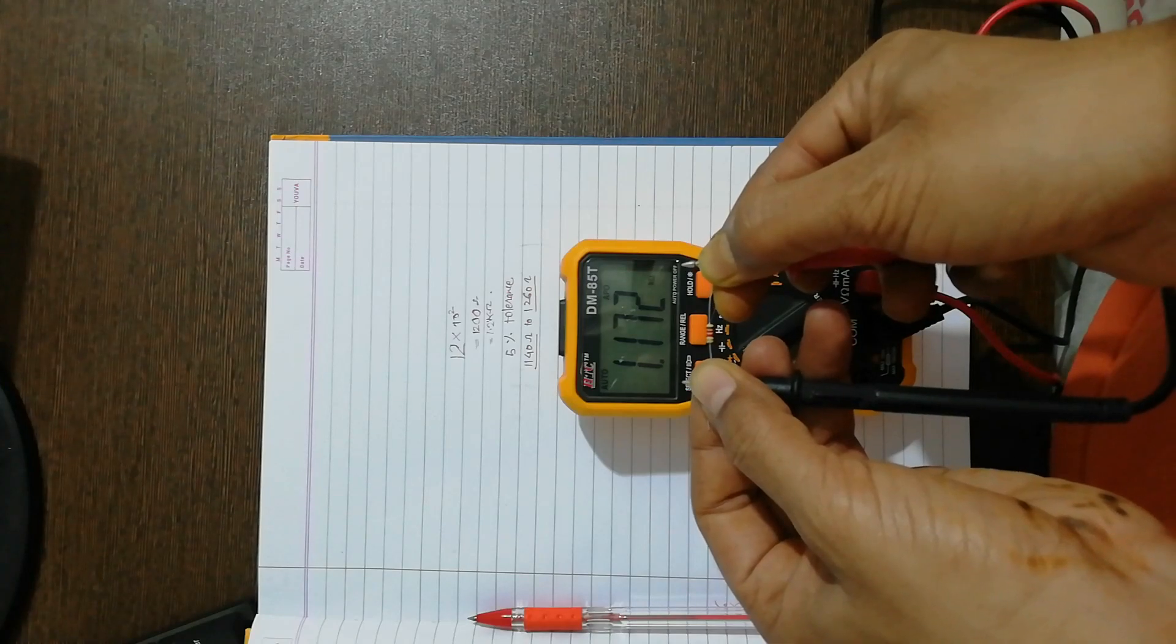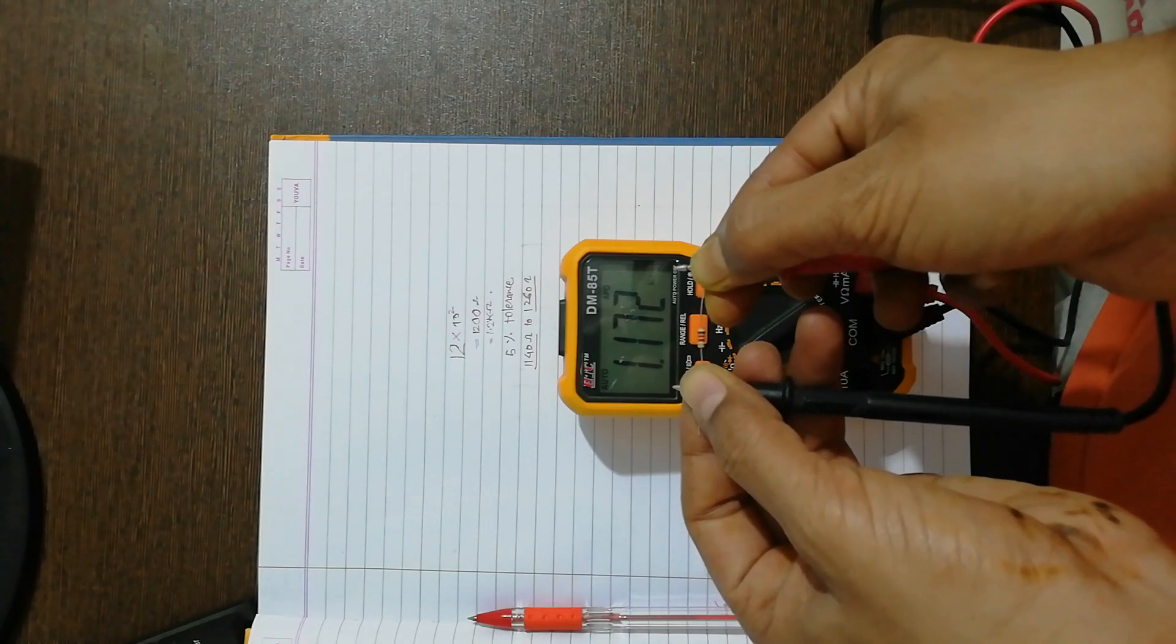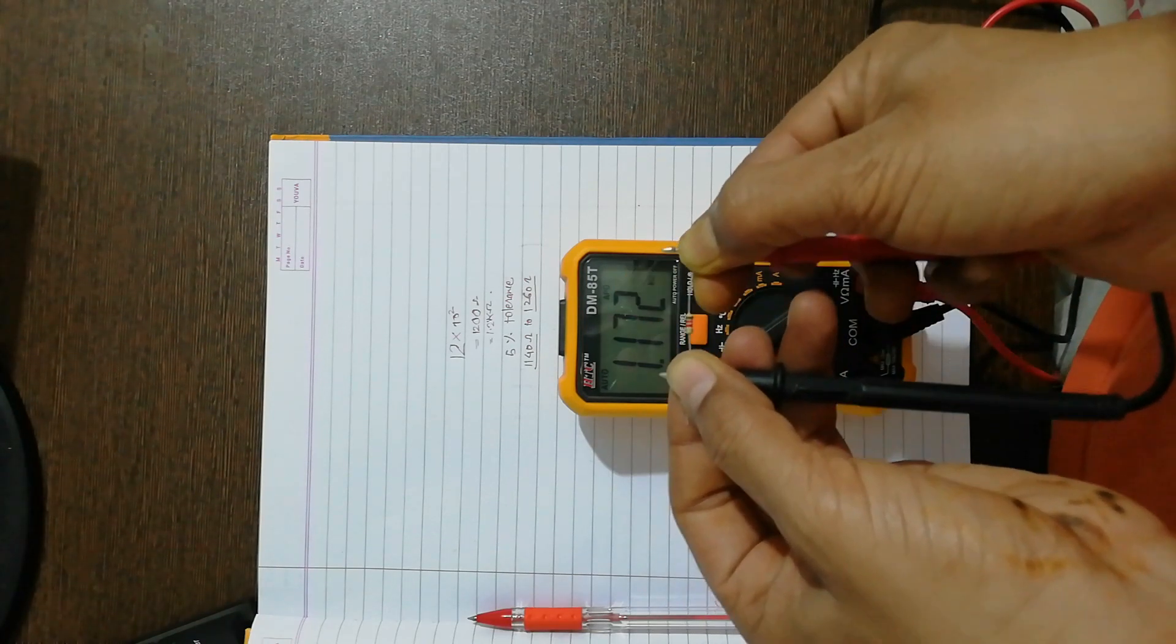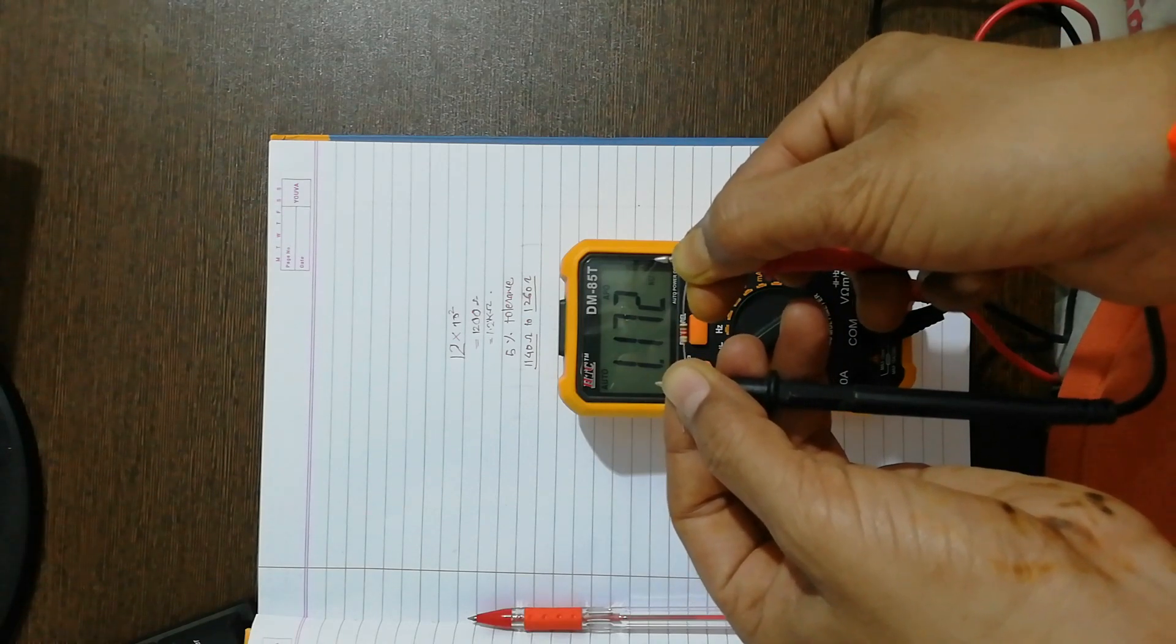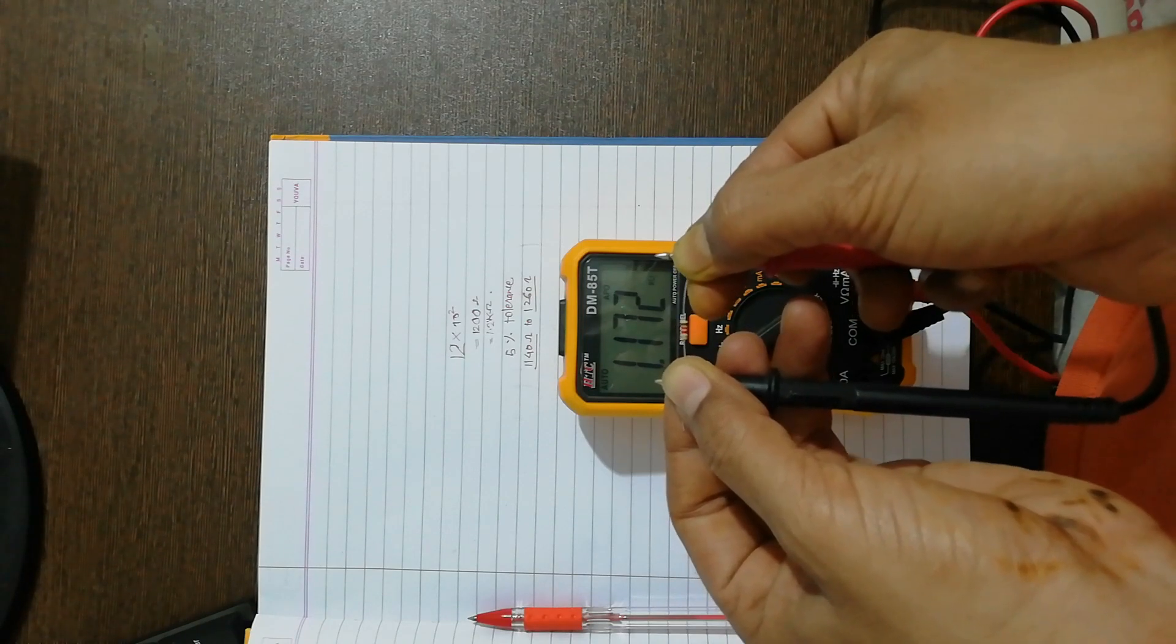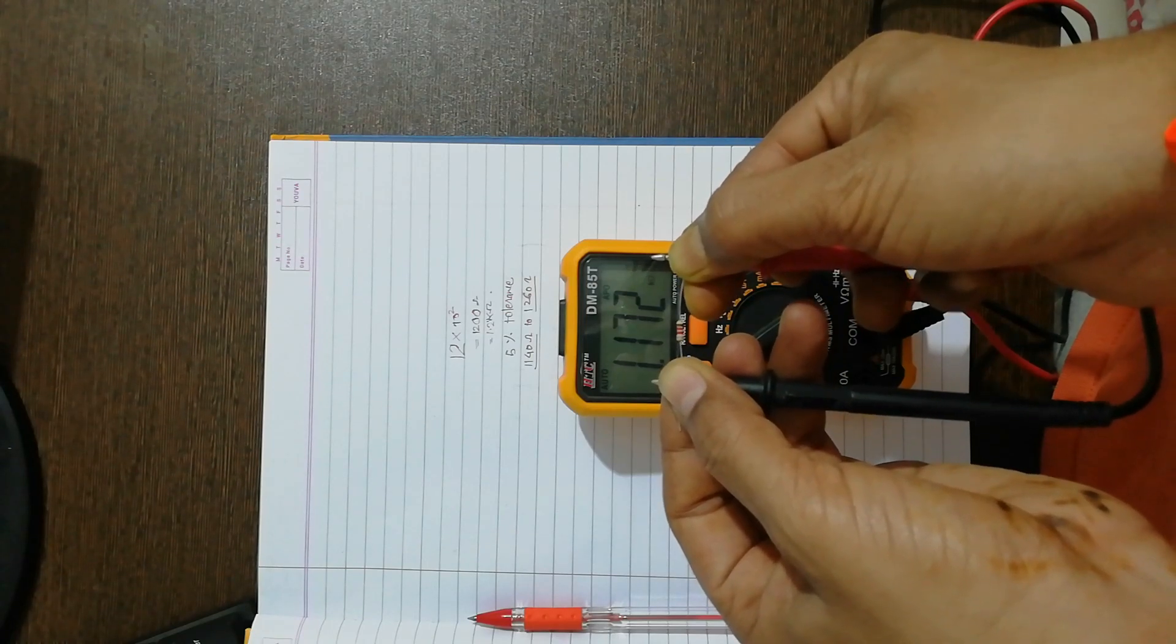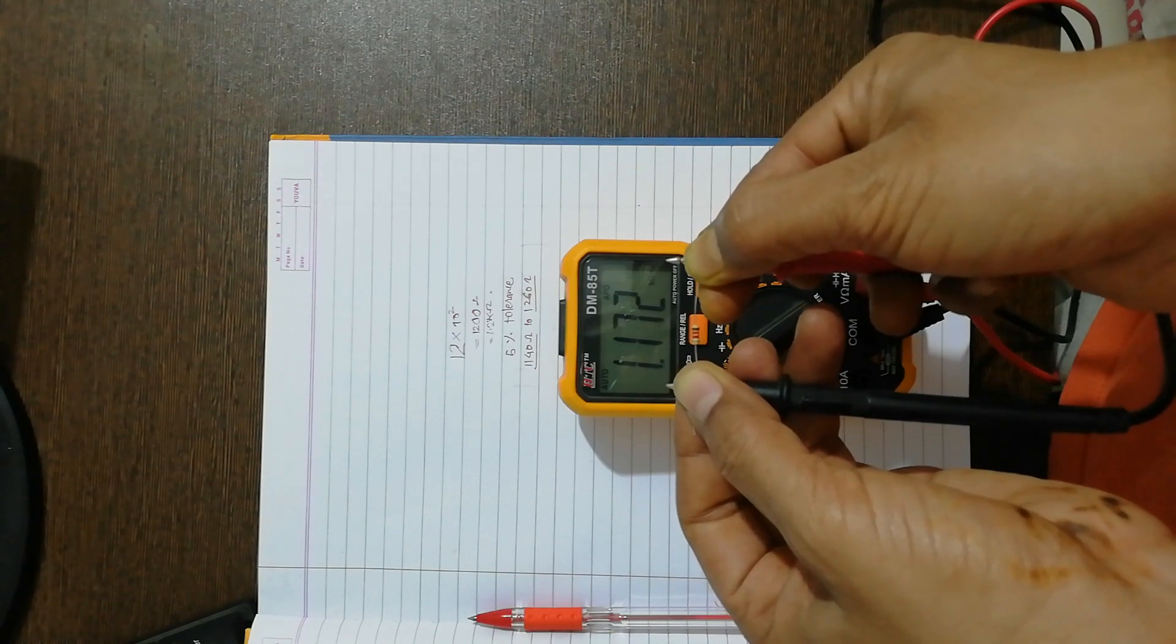So there is a difference of 28 ohms. So why is this difference? It is because of the tolerance. Remember the readings we have noted on the notebook. The value can vary from 1140 to 1260. So the measured value falls within this calculated range. The calculated range is 1140 to 1260, and the measured value is 1172.